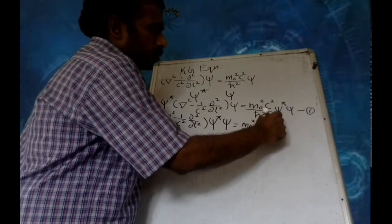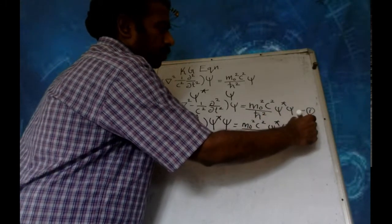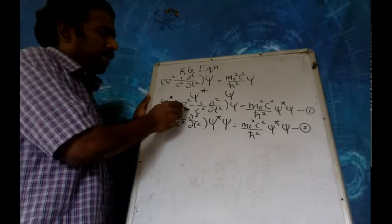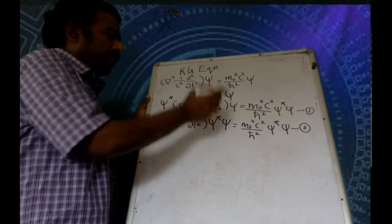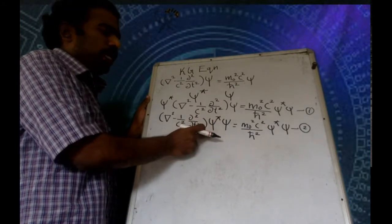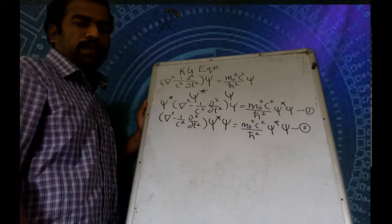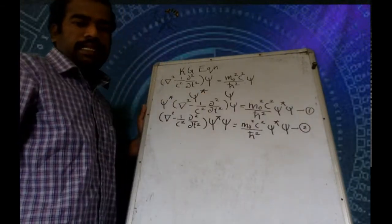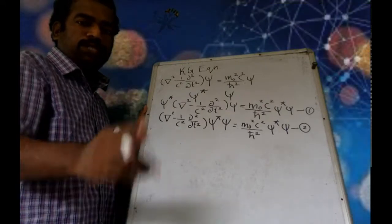The complex conjugate equation has psi from the right multiplied. We go through the process: psi-star from the left multiplied, and this equation is the complex conjugate with psi from the right multiplied. We are going to subtract these two equations — equation 1 minus equation 2.